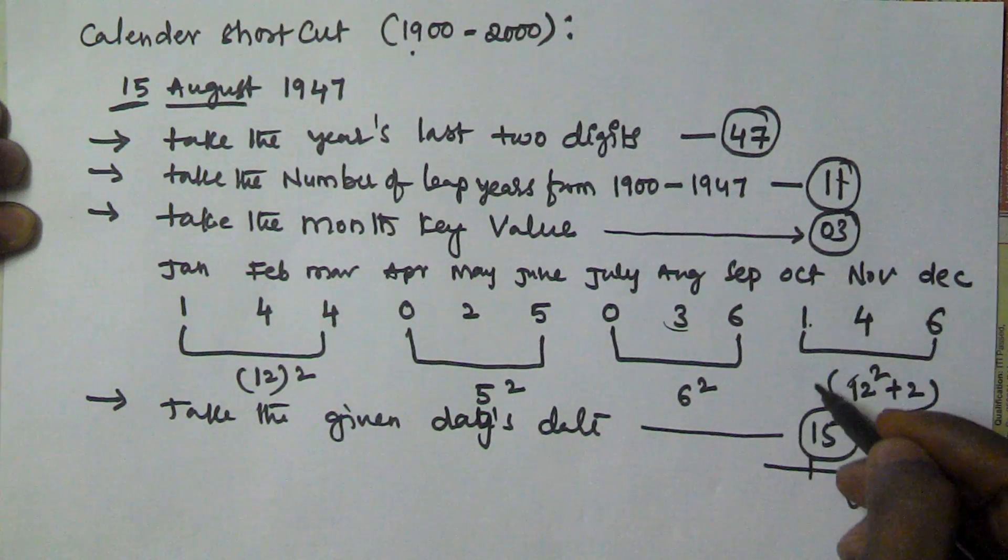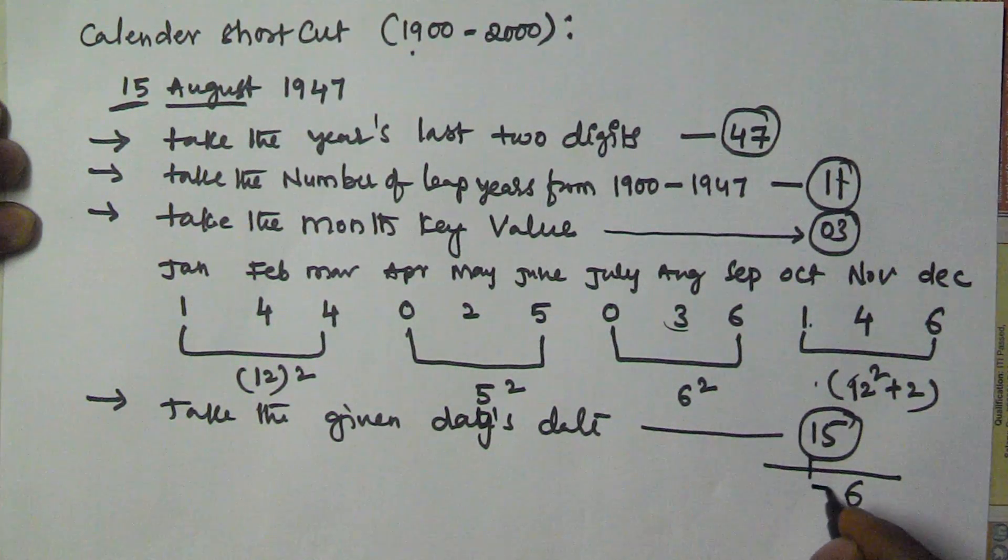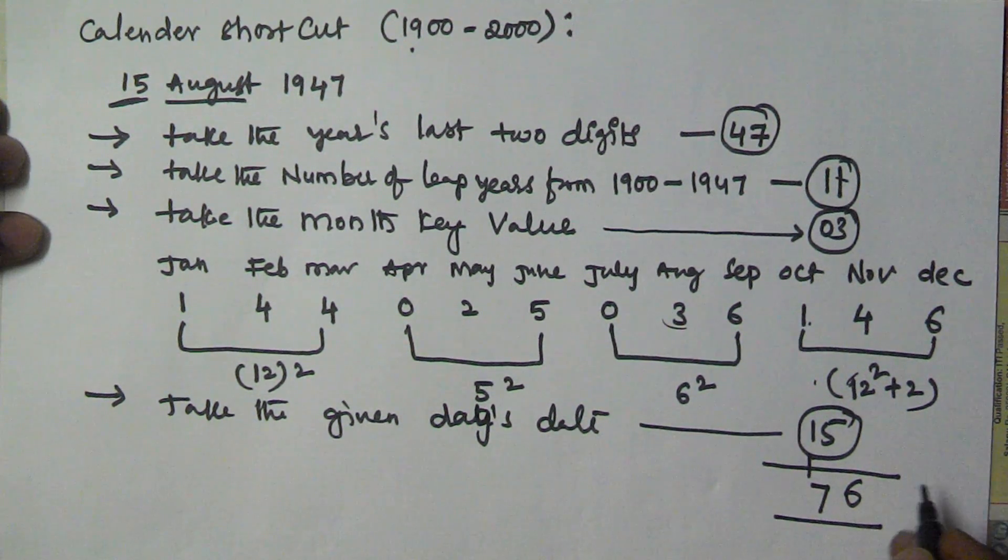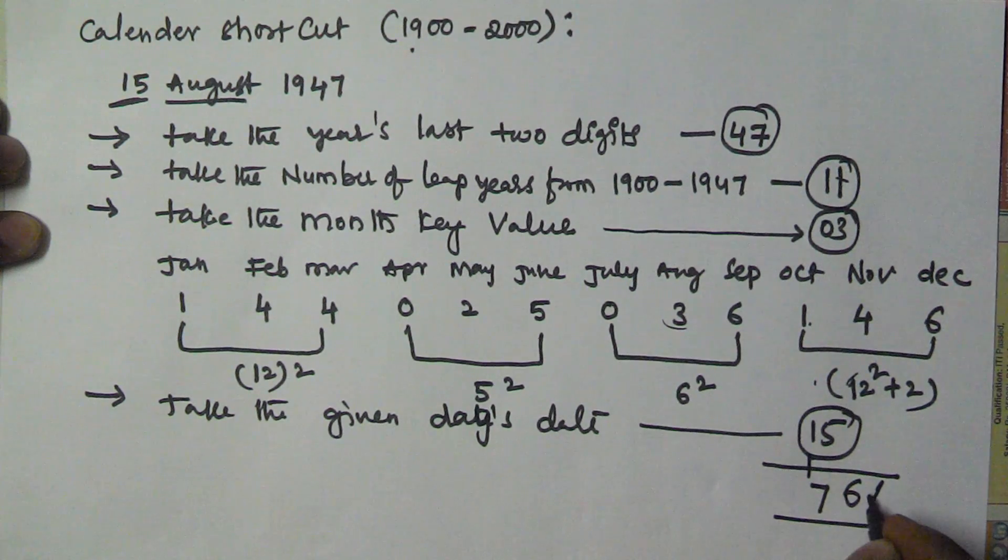To find the weekday, we have to divide this number by 7 and take the remainder. So we get 6.